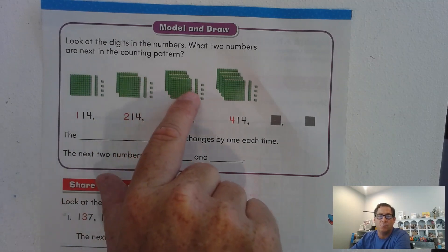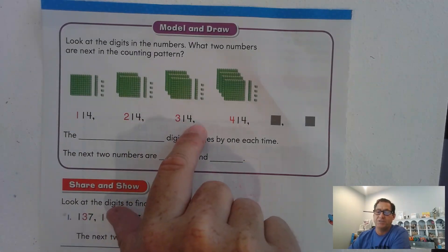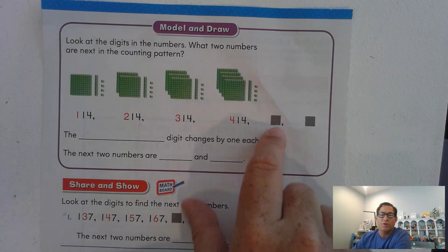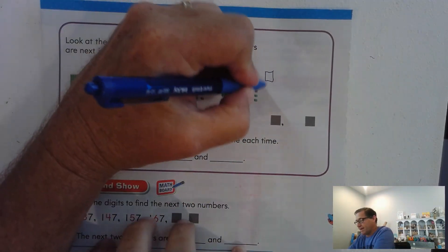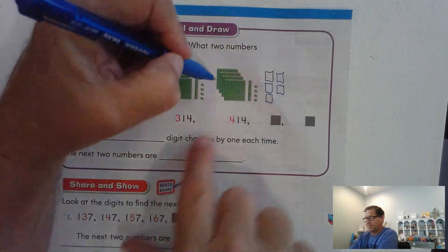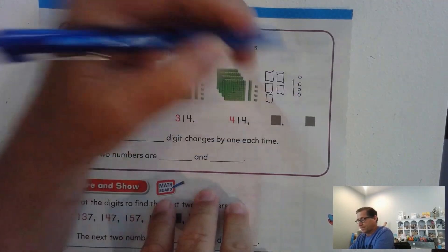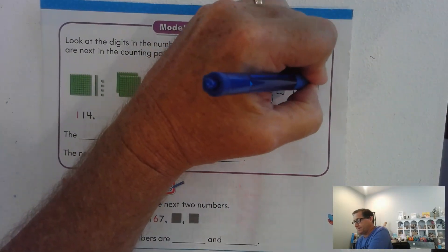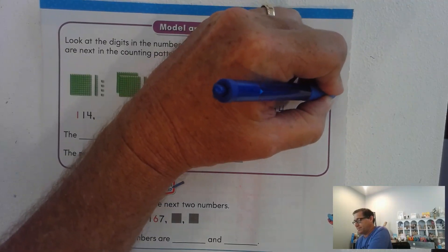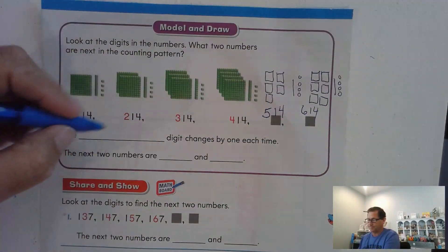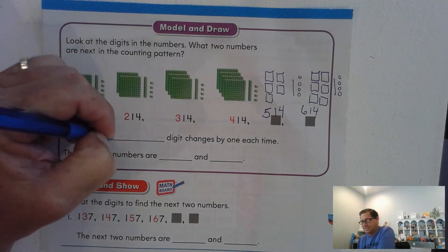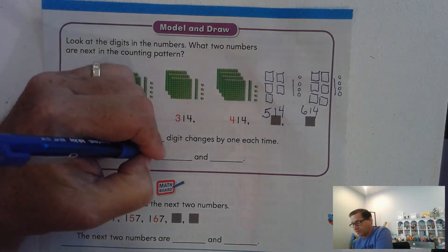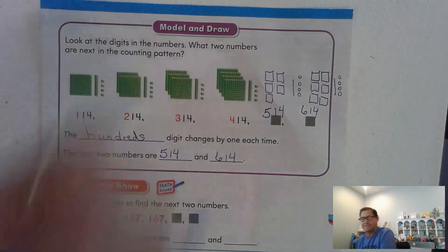Here we have three hundreds, one 10, and 4 ones. The 10 and the ones didn't change — we still have 14. All we did was add another hundred. Now we have 400. So what comes next? We would have 500, so 514. And then our last one: 614. The hundreds digit changes by one each time, so the next two numbers are 514 and 614.